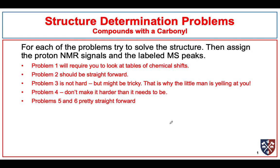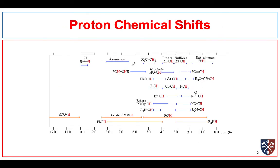Solutions for the second problem set on structure determination problems. Most of these compounds have a carbonyl compound since we started looking at that group. Now one of the things that we need when we do structure problems if we have proton NMR is a proton chemical shift table so that we can make some guesses.